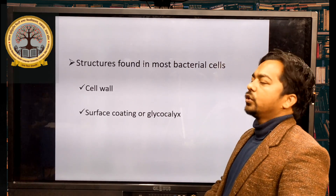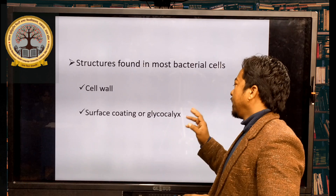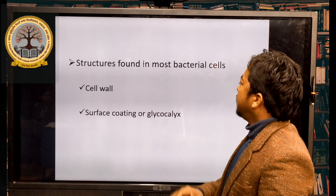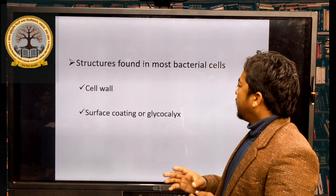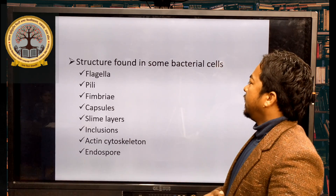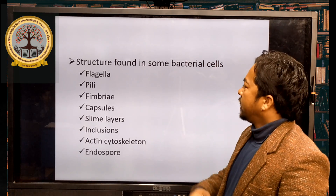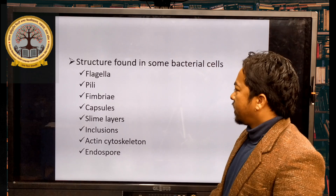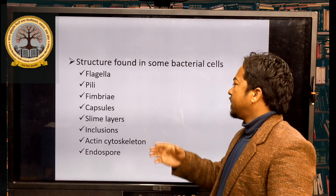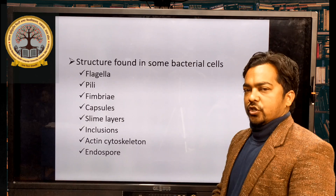Structures found in most bacterial cells include cell wall and surface coating, also known as glycocalyx. Structures found in some bacterial cells include flagella, pili, and fimbriae — these are the motility organs of prokaryotic cells. Other optional structures include capsules — the outermost layer — slime layers, inclusion bodies, actin cytoskeleton, and endospores.